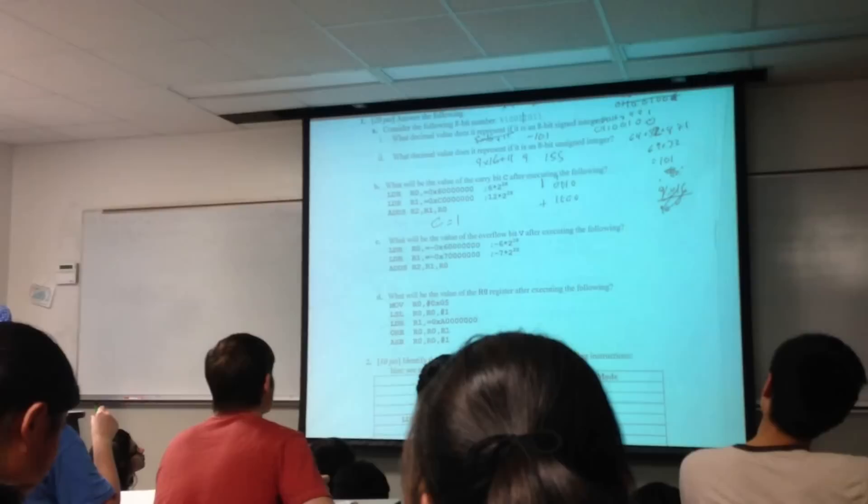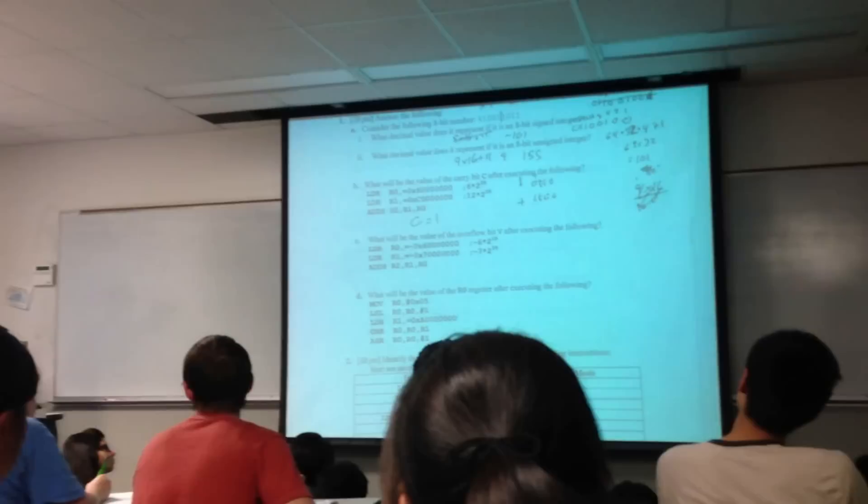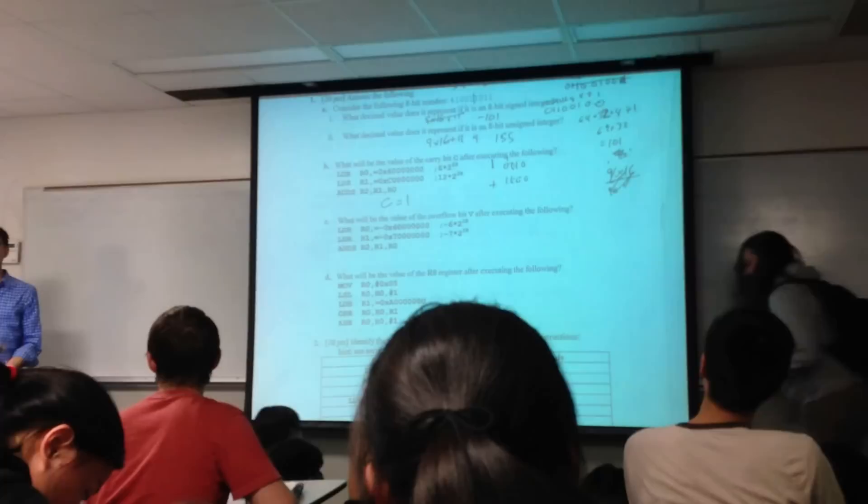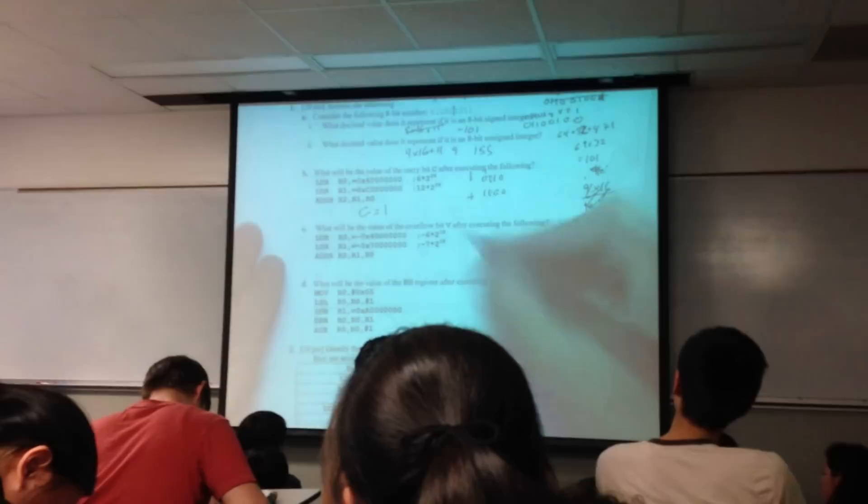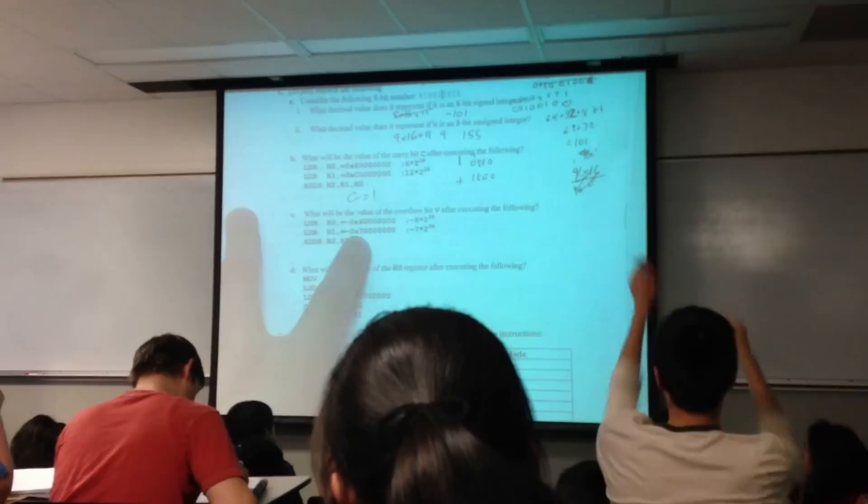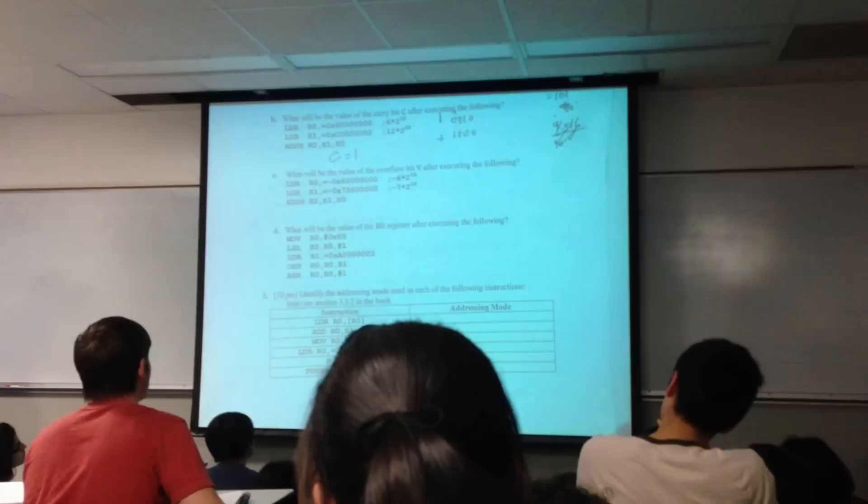So make sure that you are very attentive to that. Now this next one. What will be the value of the overflow bit V after executing the following? A 1, right? And everyone see why. So what's going to happen is you're going to add two negative numbers, and you're going to get a positive number. So the V bit actually indicates an underflow, which means that I go two low, and I get two negative, and it becomes positive.